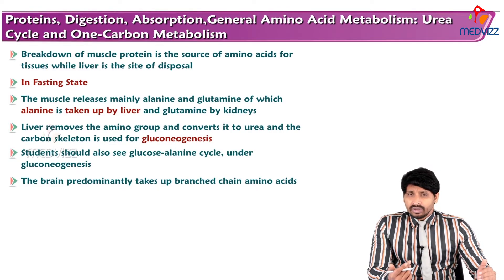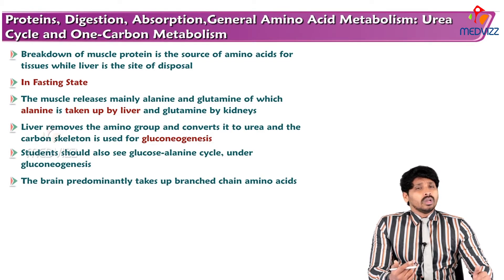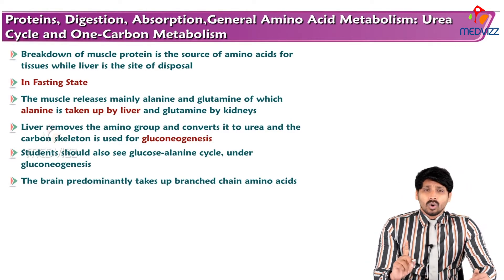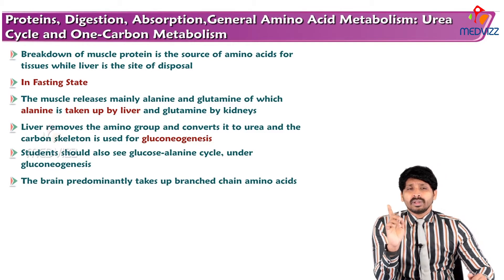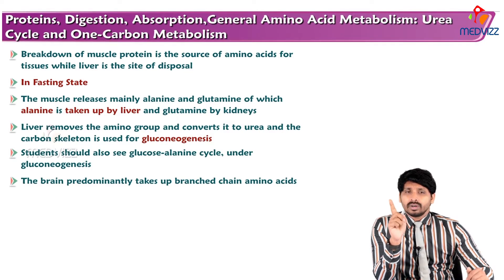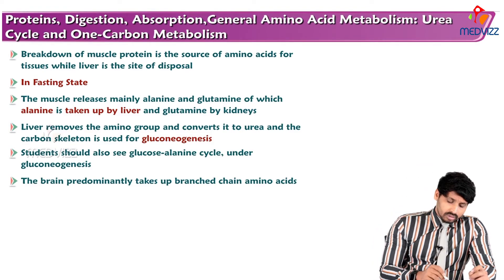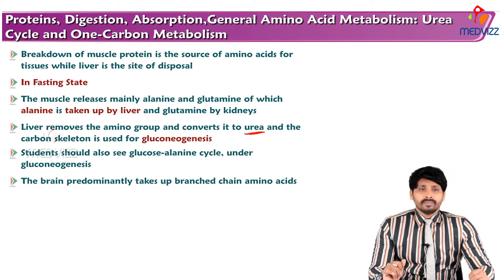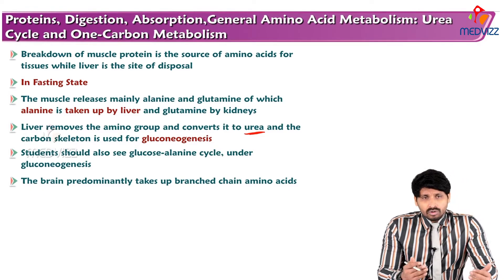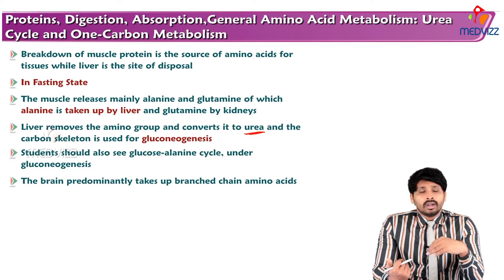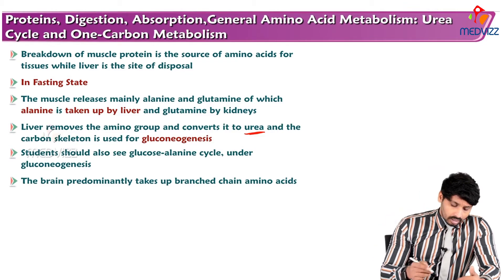When the amino group is removed from amino acids, the remaining carbon skeleton participates in making glucose or ketone bodies. One key amino acid is alanine, which comes from muscles and is taken up by the liver. The liver removes the amino group and converts it to urea — the safest, non-toxic excretory product compared to ammonia — while the carbon skeleton is used for gluconeogenesis. This correlates with the glucose-alanine cycle under carbohydrate metabolism.